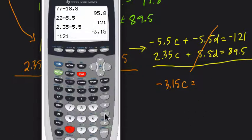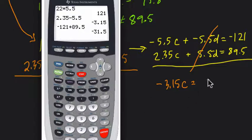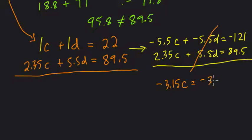Negative 121, negative sign down here, plus 89.5 gives you negative 31.5.